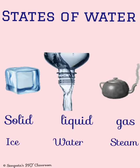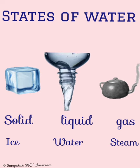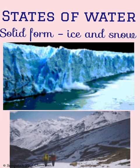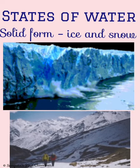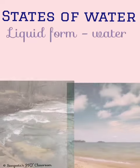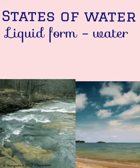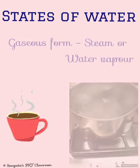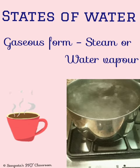Water is the only substance found in all three different states: solid state, liquid state and gaseous state. Water present as ice and snow at the polar ice caps, snow-covered mountains and frozen glaciers is in solid form. Water in rivers, lakes, ponds, seas and oceans is in liquid form. Whereas water present as steam or water vapour is in gaseous form.